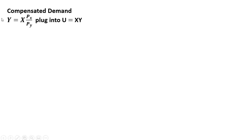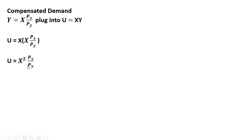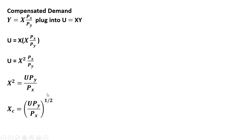So let's derive the compensated demand for good X. We found that Y equals X times the price of good X divided by the price of good Y. Let's plug that into the utility function. We get something like this. Simplifying a little bit and solving for X, taking the square root of both sides — this is the compensated demand for good X.